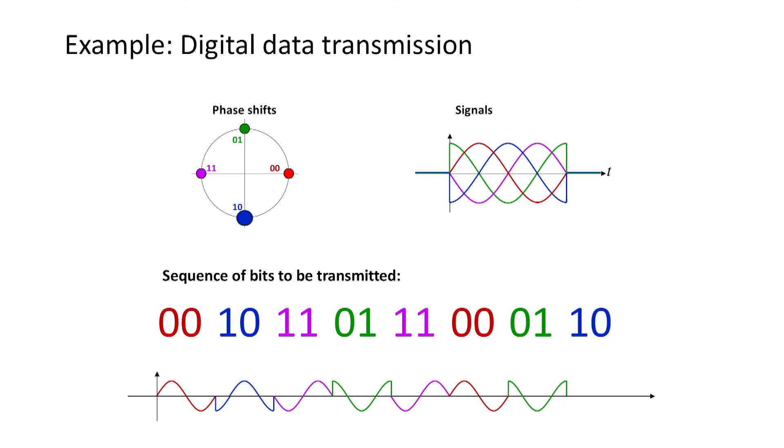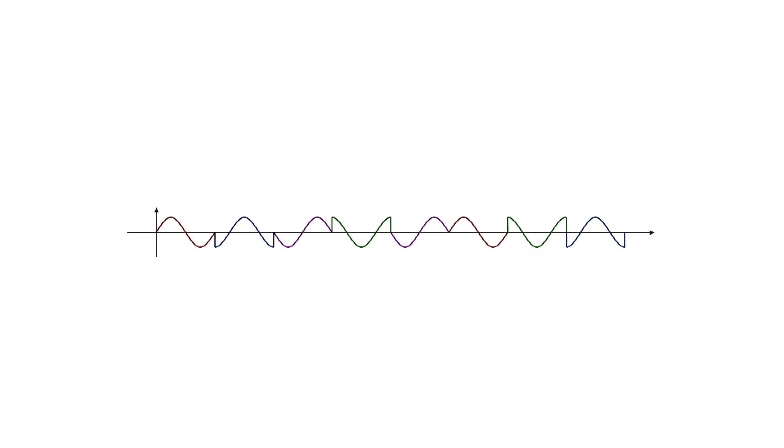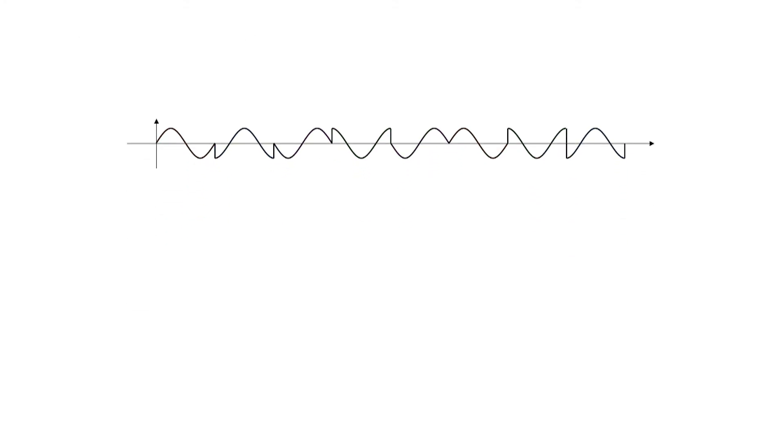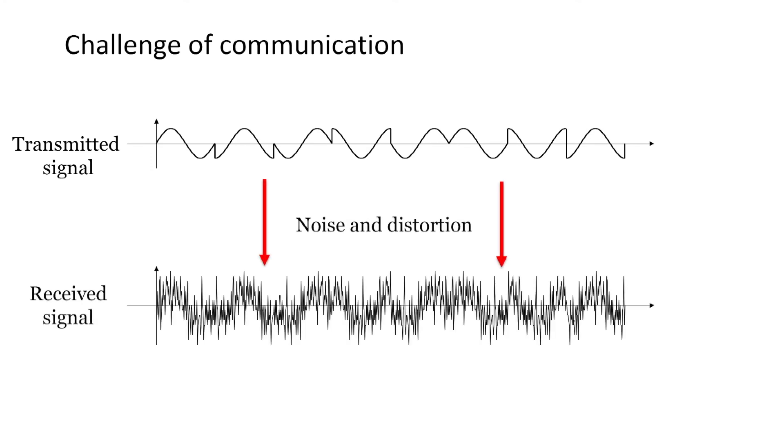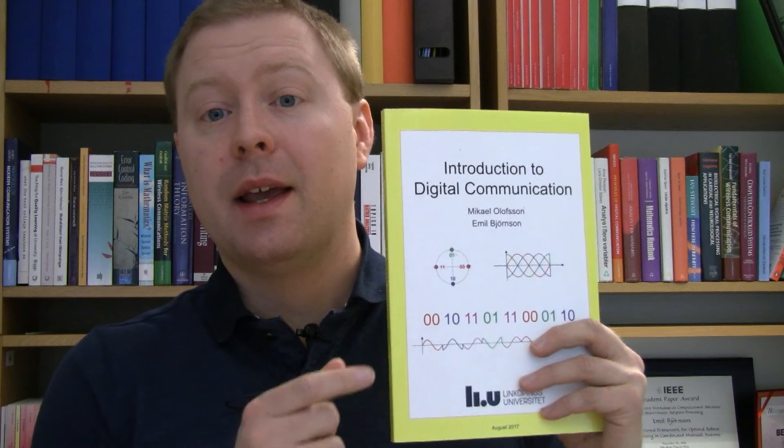The purpose of digital communication is to determine at the receiving end what information was transmitted. The problem is that there is noise and all kinds of distortion in the channel.